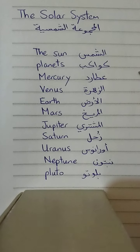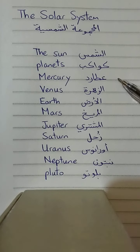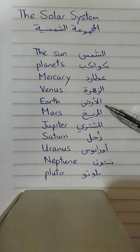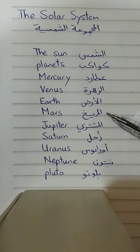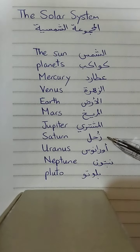The sun. The sun means the sun. Planets. Planets means the sun. Mercury. Mercury means the sun. Venus. Venus means the sun. Earth. Earth means the sun. Mars. Mars means the sun. Jupiter. Jupiter means the sun. Saturn. Saturn means the sun.